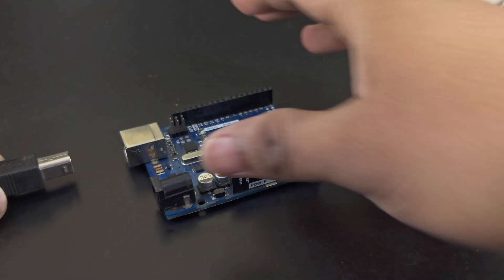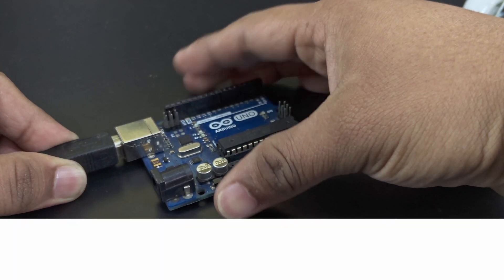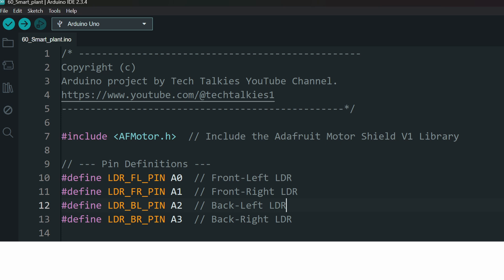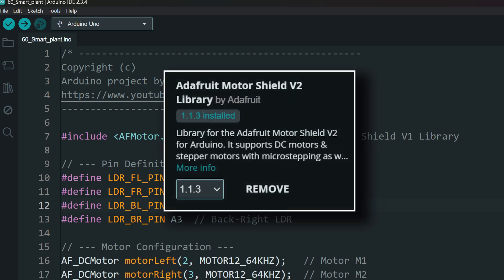Let us upload the code before we make the connections. Project link is in the description. Copy the code. The project needs the Adafruit Motor Shield Library. Install it from the Library Manager.